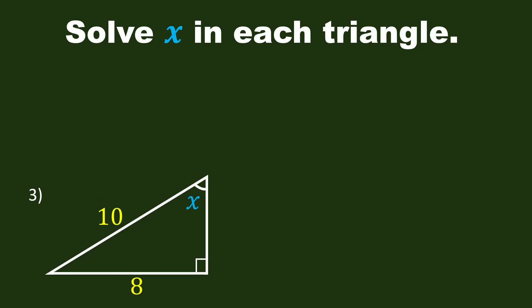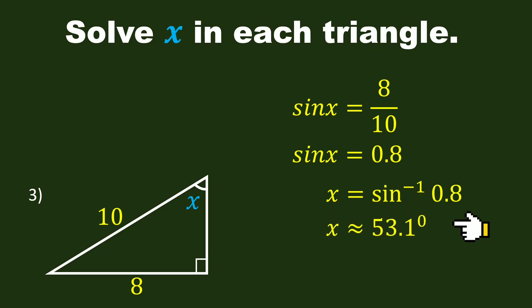Let's solve X in the third triangle. This triangle is a right triangle. X is the unknown angle. We can apply the sine ratio. We have sine X is equal to 8 over 10. Sine X is equal to 0.8. X is equal to inverse sine 0.8. And finally, X is approximately 53.1 degrees.